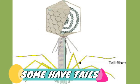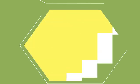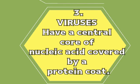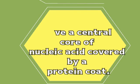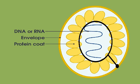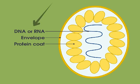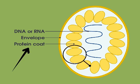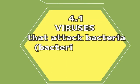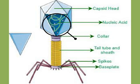Number three: a virus consists of a central core of nucleic acid, which can either be DNA or RNA, covered by a protein coat. The viruses that attack bacteria, known as bacteriophages, can either have DNA or RNA as their nucleic acid.